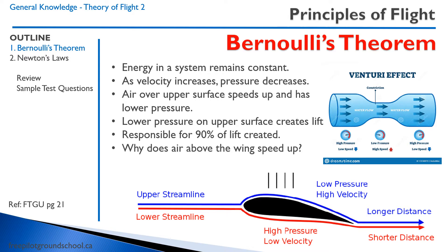Bernoulli's theorem is often credited for 90% of the lift created, with Newton's theorem accounting for the remaining 10%. But I have a quick question: why does air above the wing speed up?